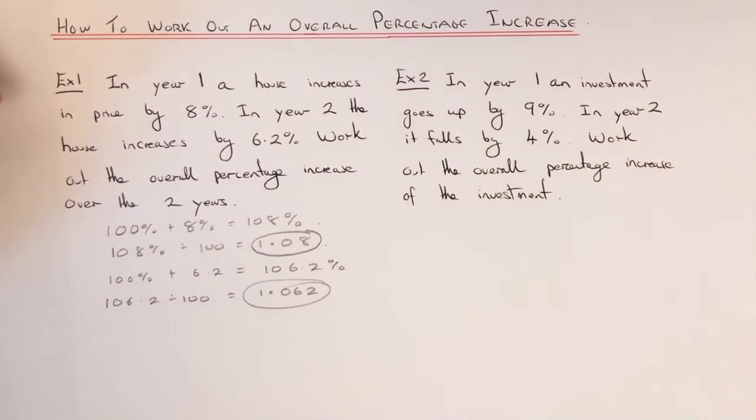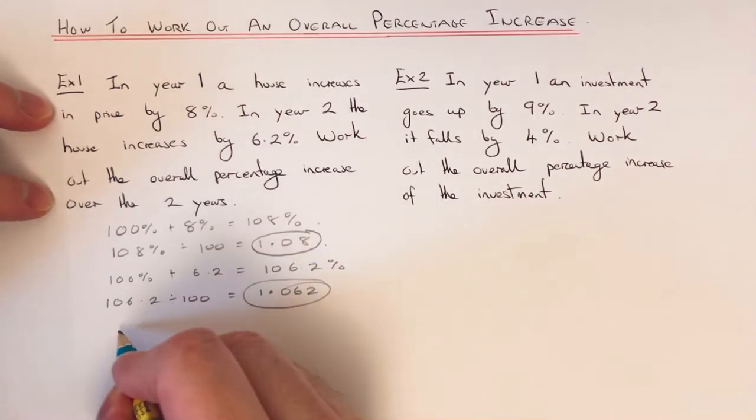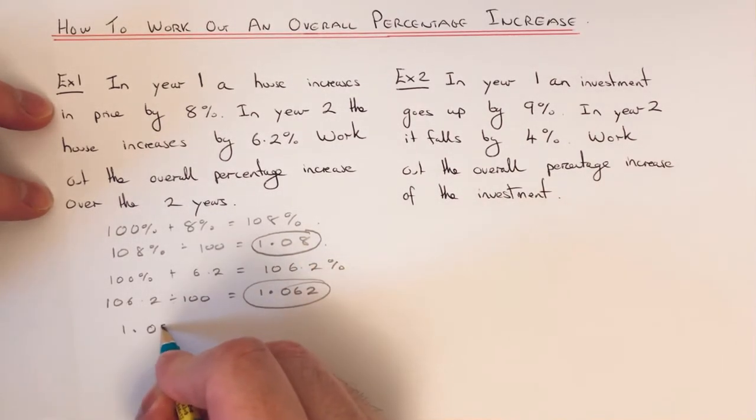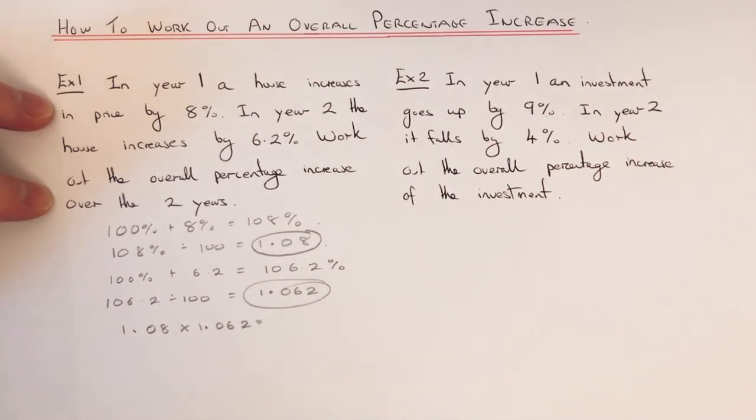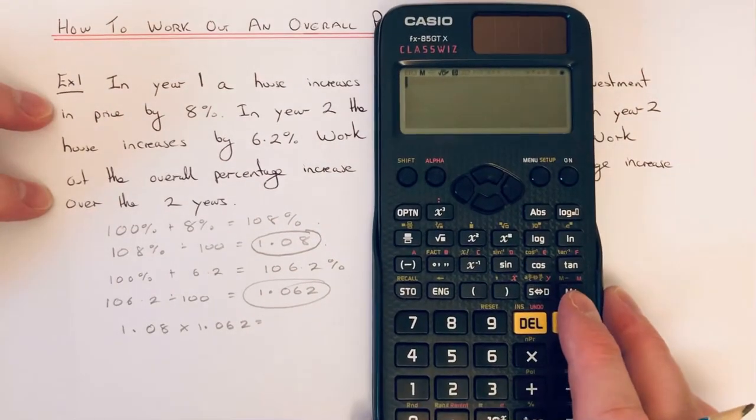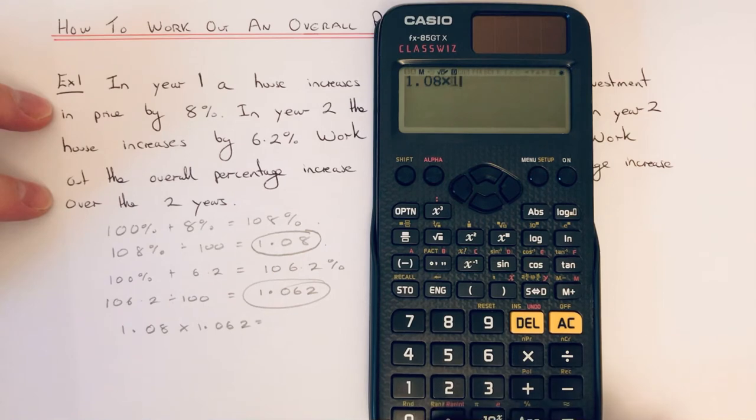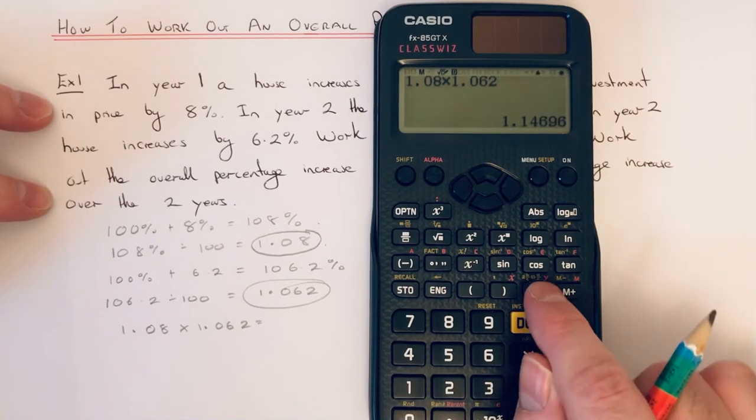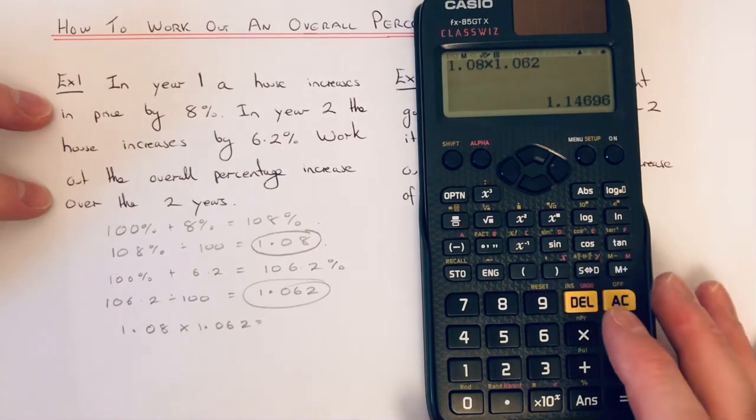To get the overall percentage increase, we times these two decimals together. So 1.08 times 1.062. We get 1.14696, so we'll round this off to three decimal places.